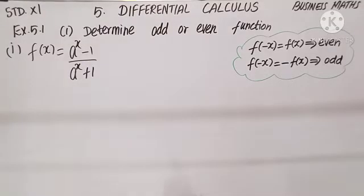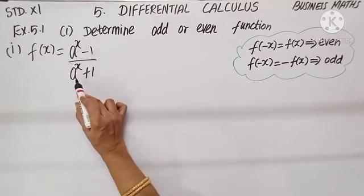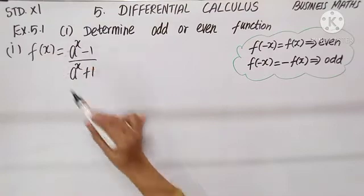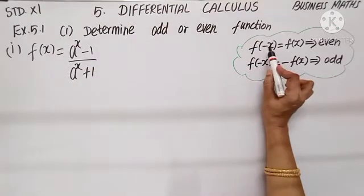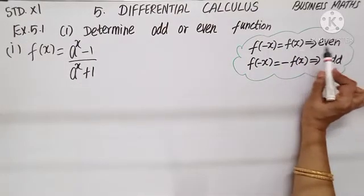Good morning children. We proceed on to exercise 5.1 based on functions. Question number 1: determine odd or even functions. Given f(x) = (aˣ - 1)/(aˣ + 1). Wherever x is coming, let us put minus x. If I get the same function again, I call it even.